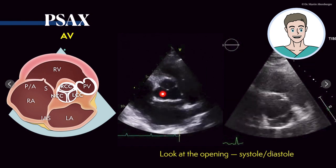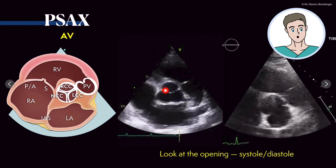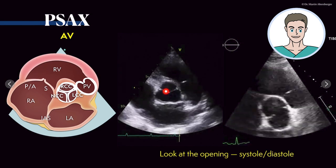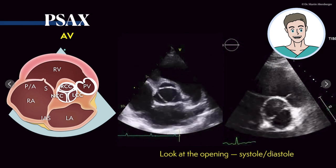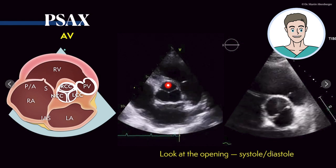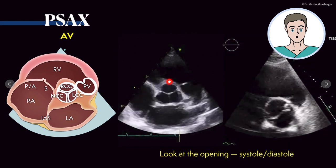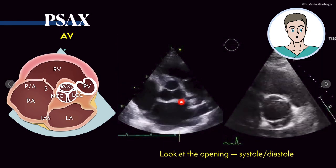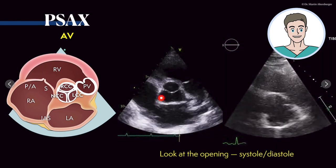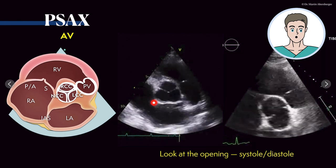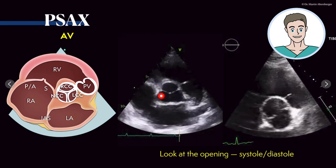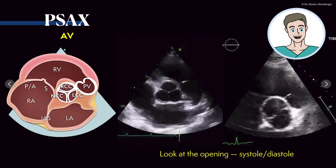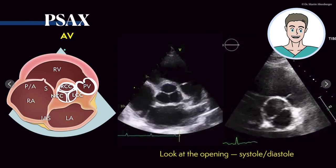Here you see the aortic valve with a normal opening. The leaflets or cusps are normal. The surface seen here is smooth and there are three of them. The right coronary cusp pointing towards the right ventricle or the RVOT, the left coronary cusp towards the left atrium, and the non-coronary cusp towards the interatrial septum. When you see something like this, you're definitely sure the opening of the aortic valve is still normal.